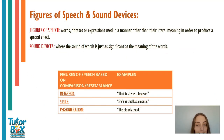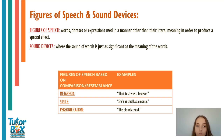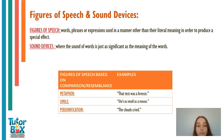Now we're going to move on to figures of speech and sound devices. The definition of figures of speech is words, phrases, or expressions used in a manner other than their literal meaning in order to produce a special effect. The definition of sound devices is where the sound of words is just as significant as the meaning of words. Now we're going to look at figures of speech based on comparison or resemblance, along with their examples and functions.